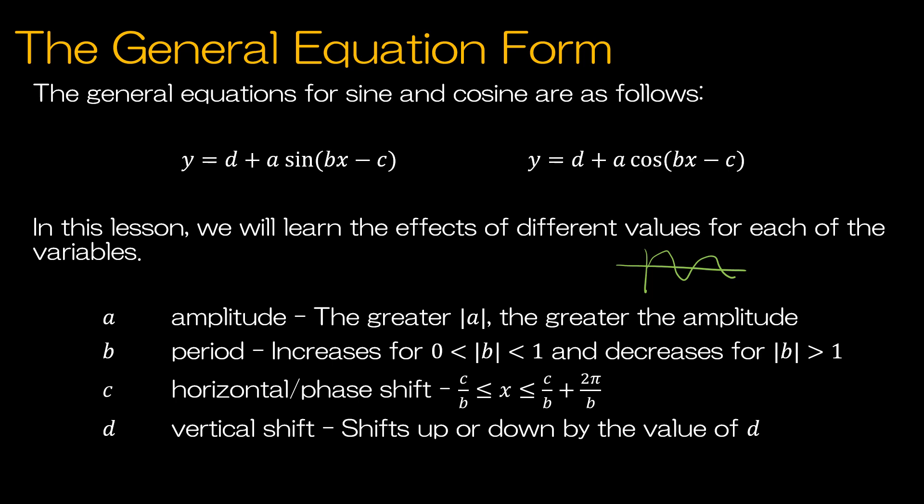For c, c actually doesn't do anything all by itself. It's tied to b, because c is going to shift our graphs right or left, but it's also going to take b into account, because that's going to affect the value as well. So right or left. And then the vertical shift just shifts it up or down. That's a very easy one. So up or down by the value of d. So I'm going to erase my markings, because this is a really good screenshot page. And in the following pages, we're going to look at all four of these transformations.